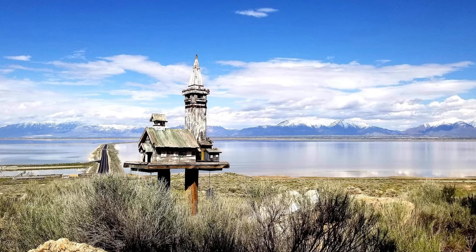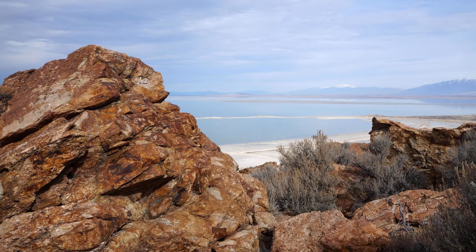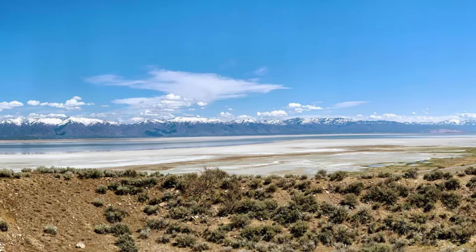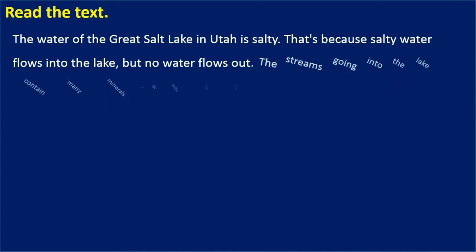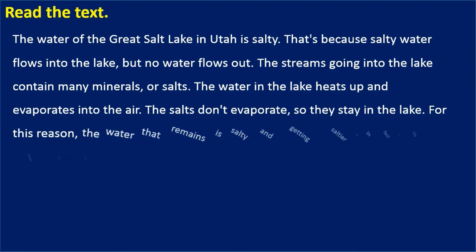The water of the Great Salt Lake in Utah is salty. That's because salty water flows into the lake, but no water flows out. The streams going into the lake contain many minerals, or salts. The water in the lake heats up and evaporates into the air. The salts don't evaporate, so they stay in the lake. For this reason, the water that remains is salty and getting saltier. In fact, the Great Salt Lake is too salty for fish to live in.